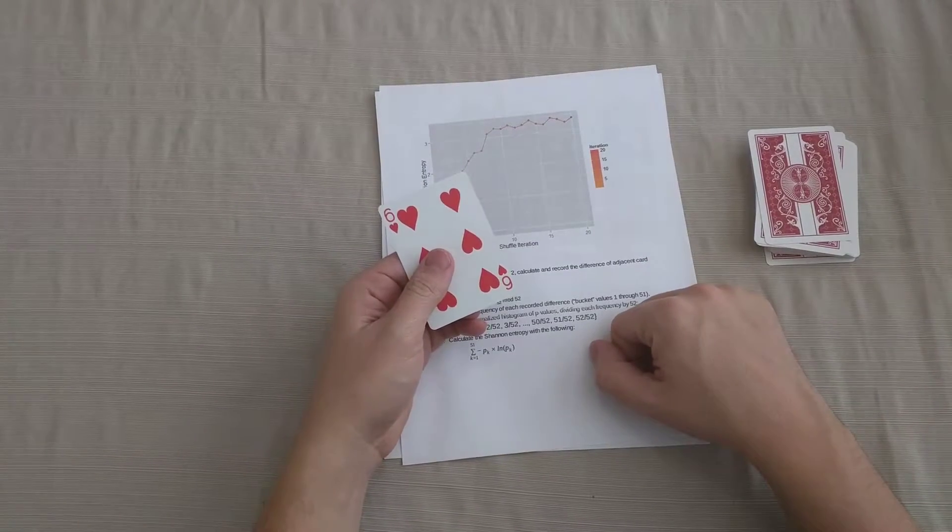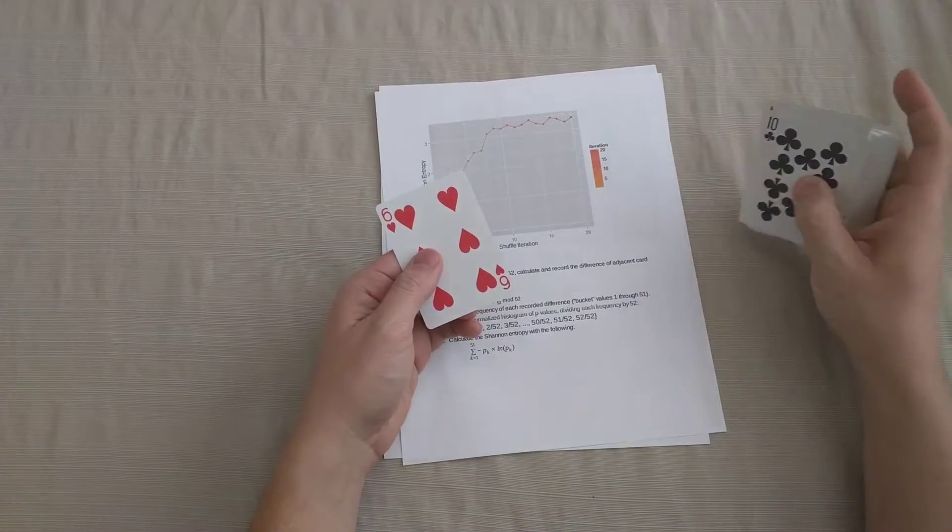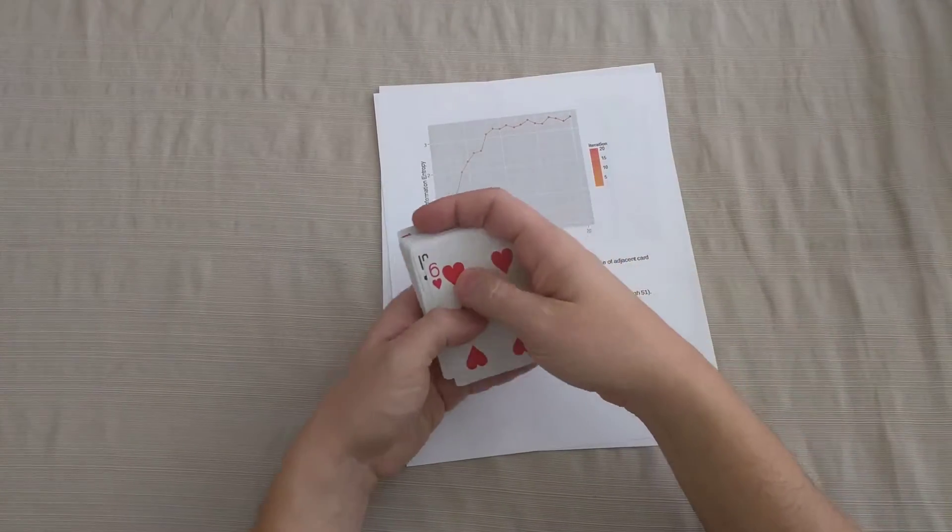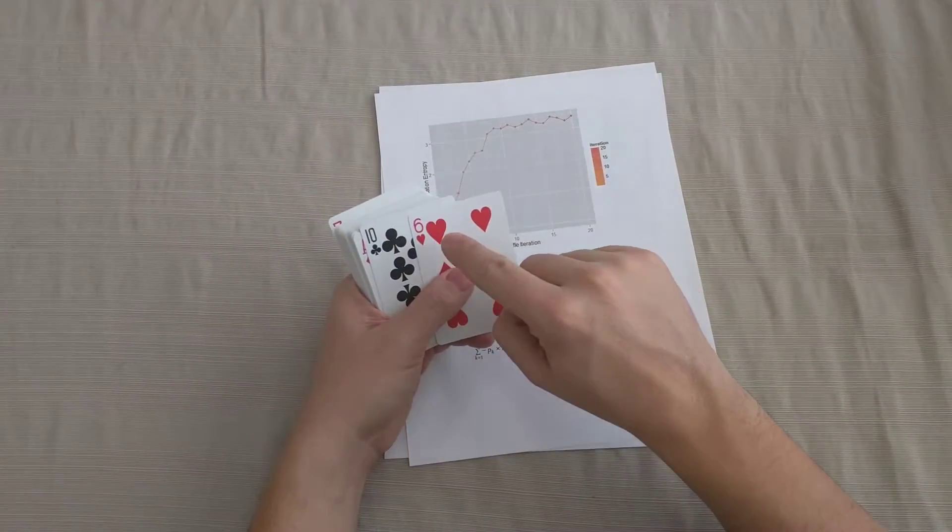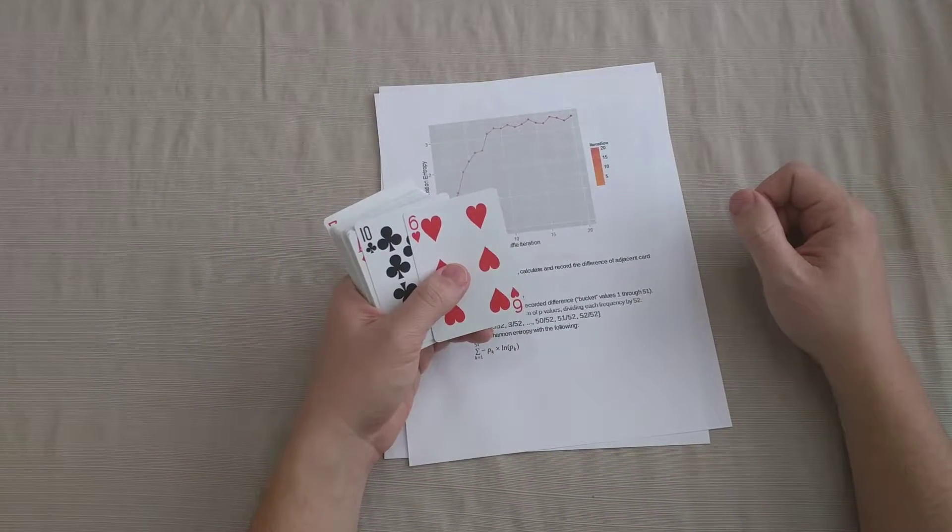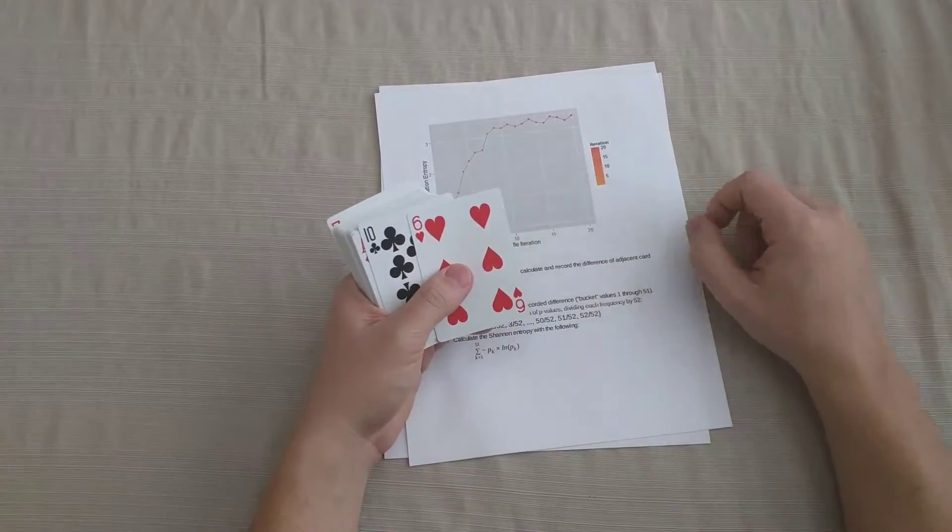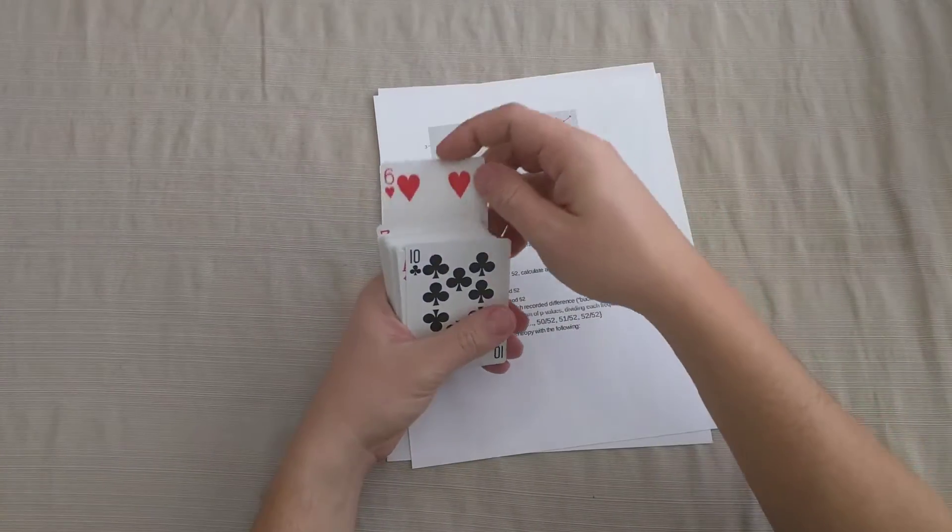I would record the difference of the seven of diamonds, which is 20, minus the six of hearts, which is 30. 20 minus 30 is a negative 10. Negative 10 plus 52 is a positive 42. But now I don't have an adjacent card for the six of hearts. This is a special case, I would wrap around the deck and take the difference of the last card with the top card, mod 52. So in this case, I would have 30 minus 10 is 20. I would write down 20 and I would be finished.